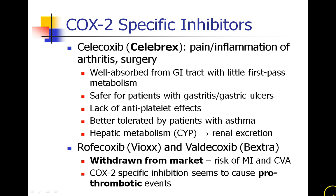Now we'll talk about NSAIDs that block only the COX-2-specific enzymes. The one you're most likely to encounter is celecoxib, also called Celebrex — commonly used for pain, inflammation, arthritis, and orthopedic surgery. This drug is very well absorbed from the GI tract, with little first-pass metabolism, and is felt to be much safer for patients with gastritis or gastric ulcers because the COX-1 system is not nearly as affected. We don't see many antiplatelet effects, and patients with asthma tolerate them well. They are metabolized by the cytochrome P450 system in the liver and renally excreted. Other COX-2 inhibitors like Vioxx and Bextra have been taken off the market because patients had an increased risk of myocardial infarction and stroke — COX-2-specific inhibition can cause prothrombotic events.